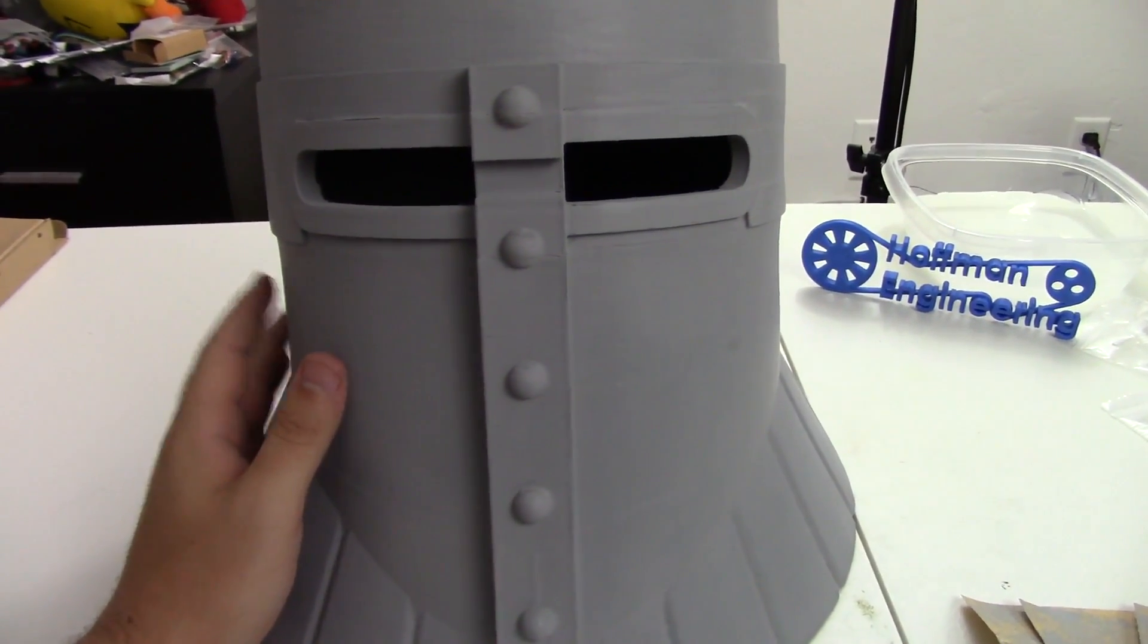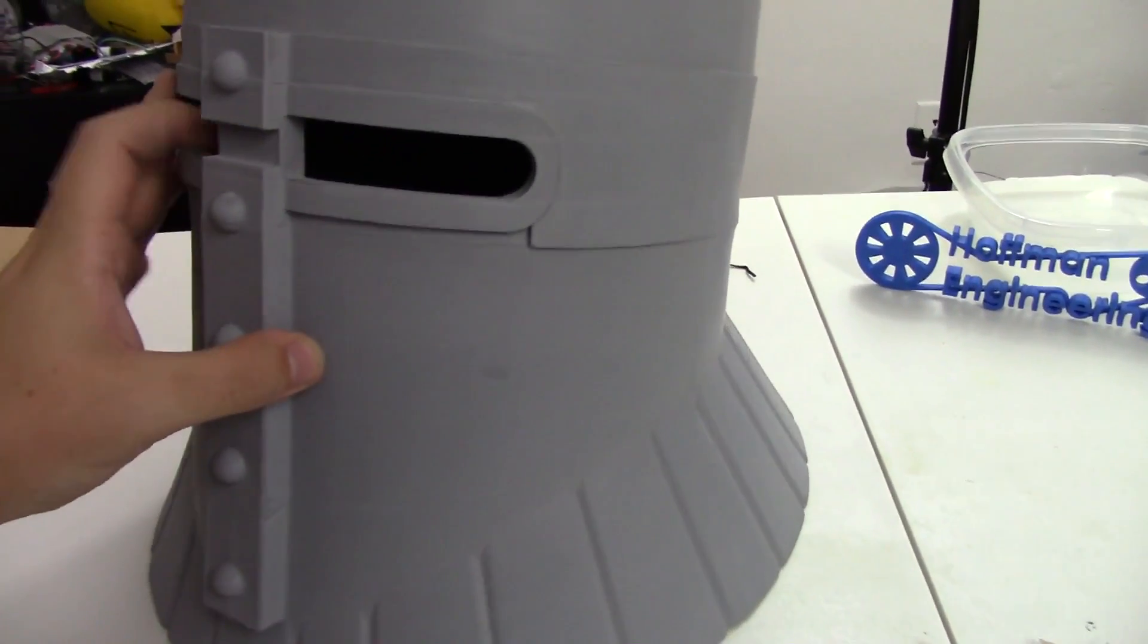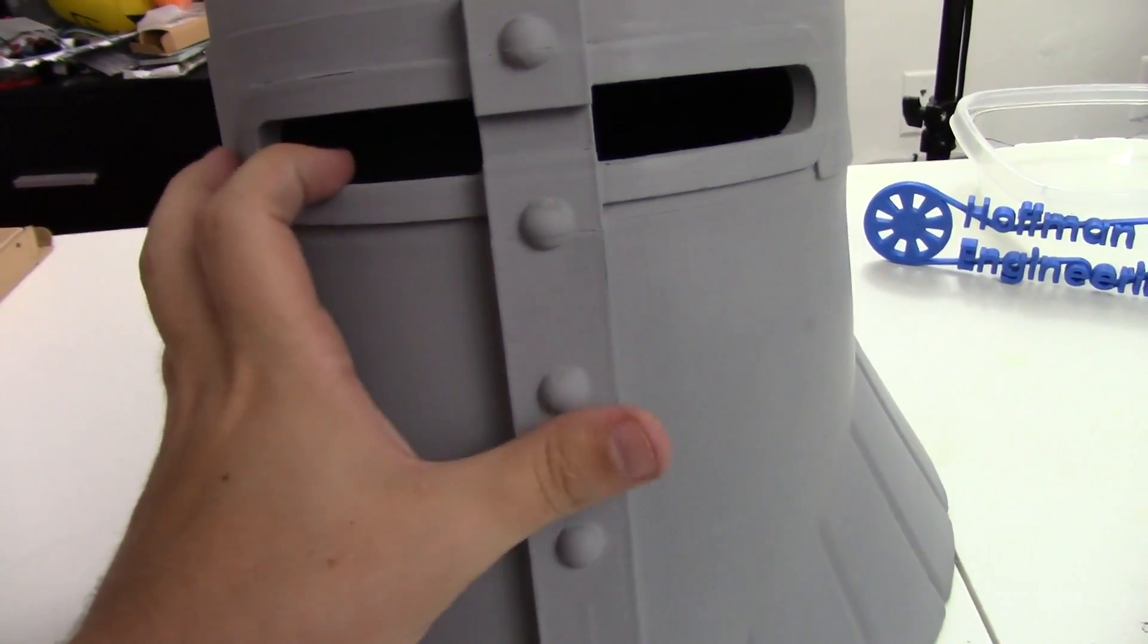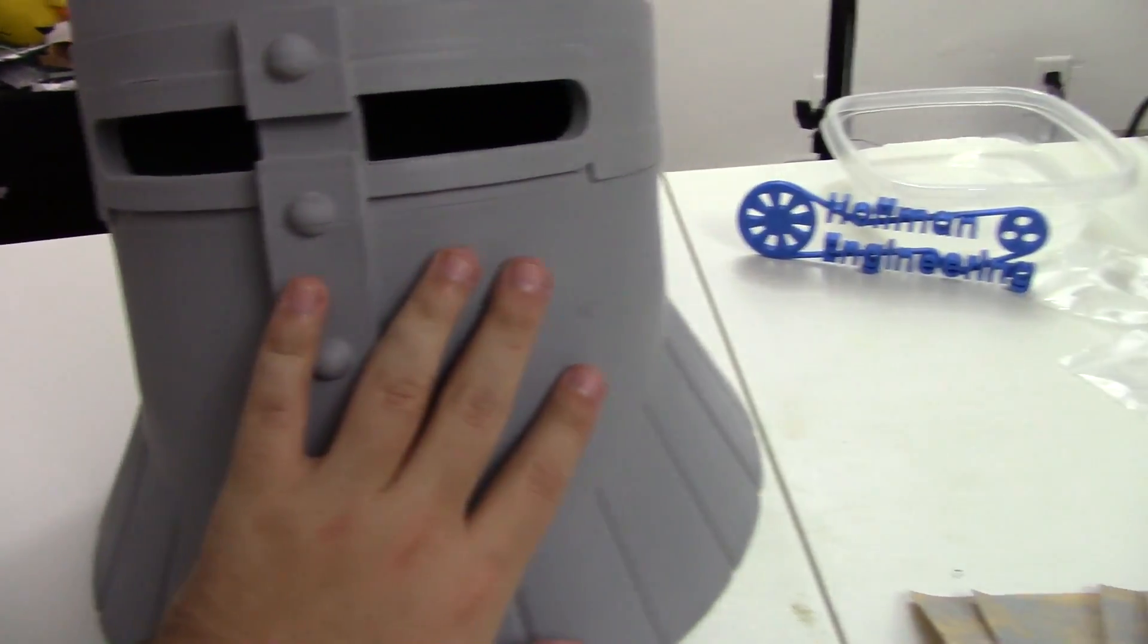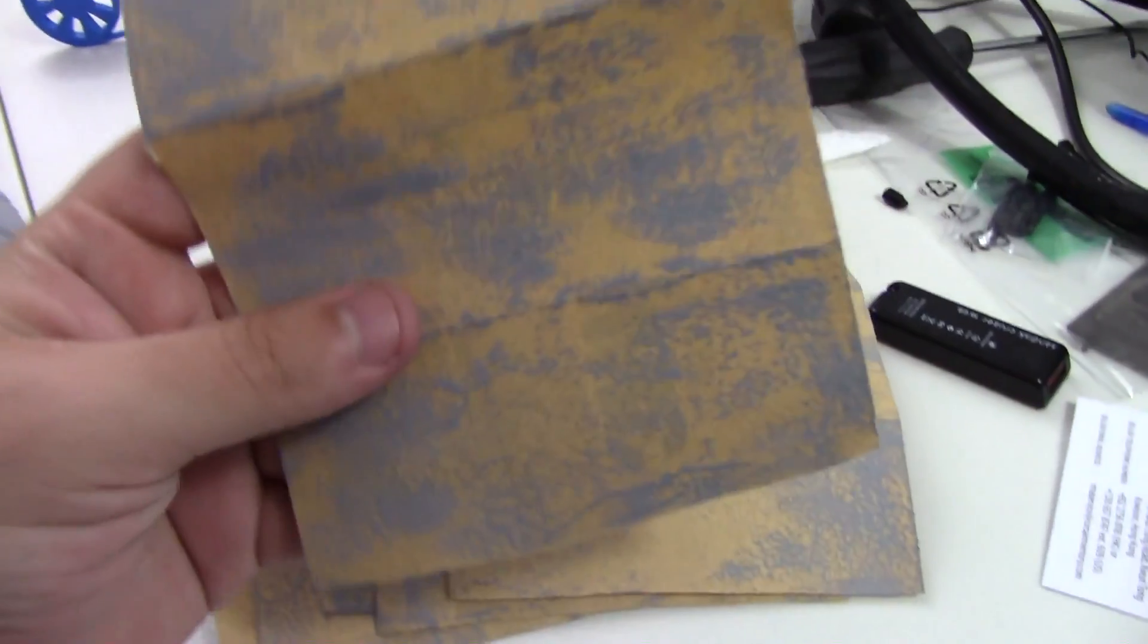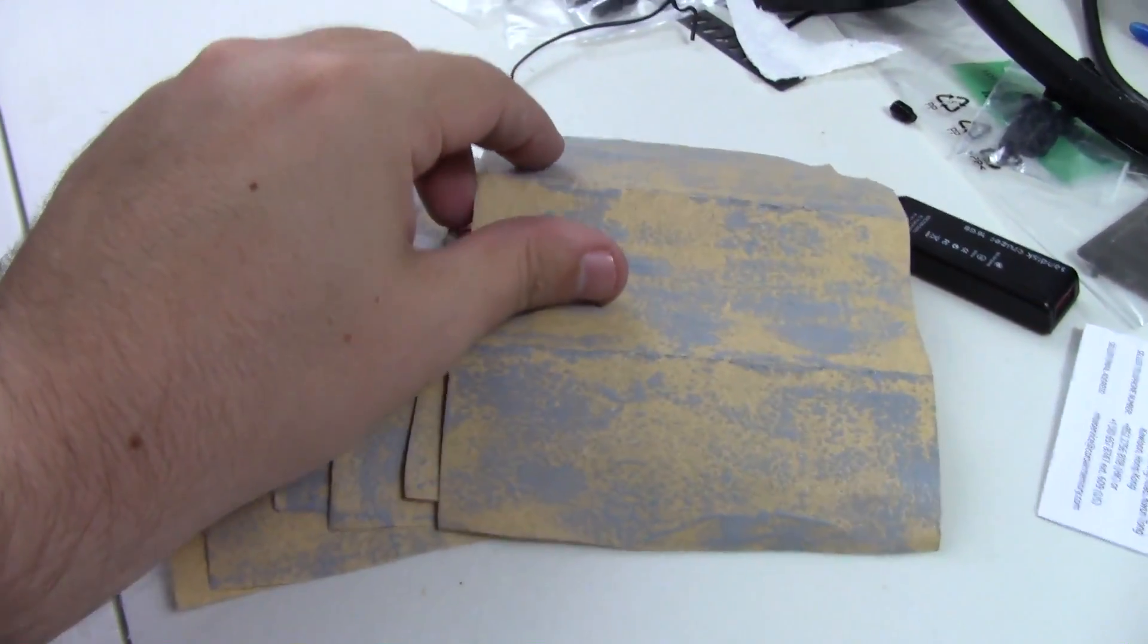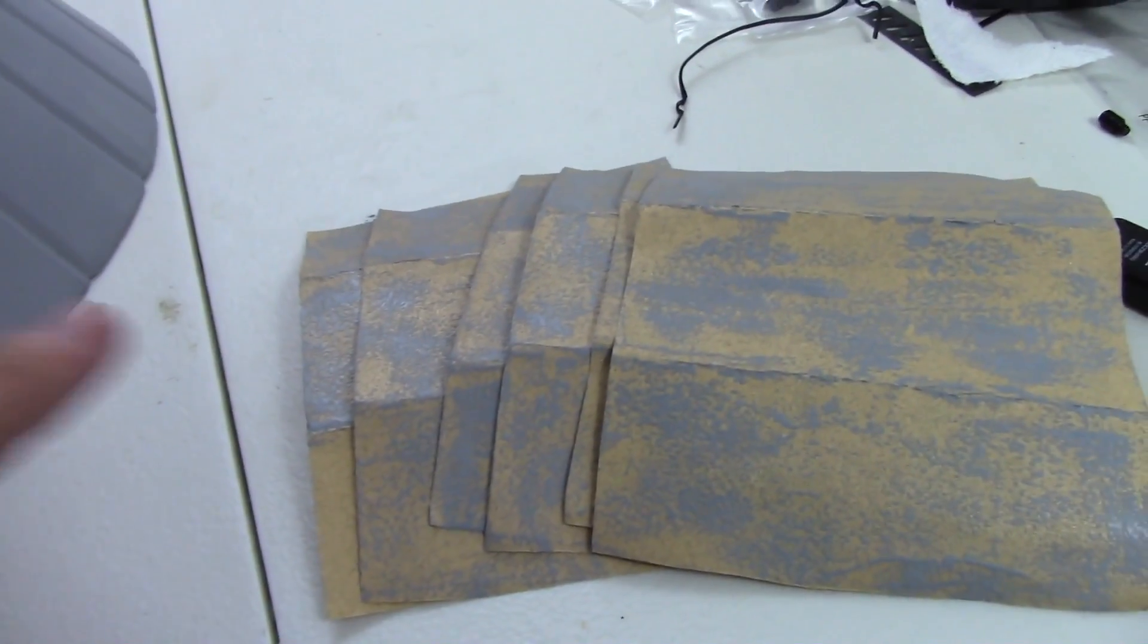An hour later and I have half the helmet sanded. I've only sanded this half so I can compare it with the unsanded half on this side. But the first thing I'd like to say is that this primer, the filler primer, it really gums up your sandpaper. I used a lot of sandpaper only for half the helmet. So if you're dry sanding this primer, be prepared to use a lot of sandpaper. It can be wet sanded, but I have not done that yet.